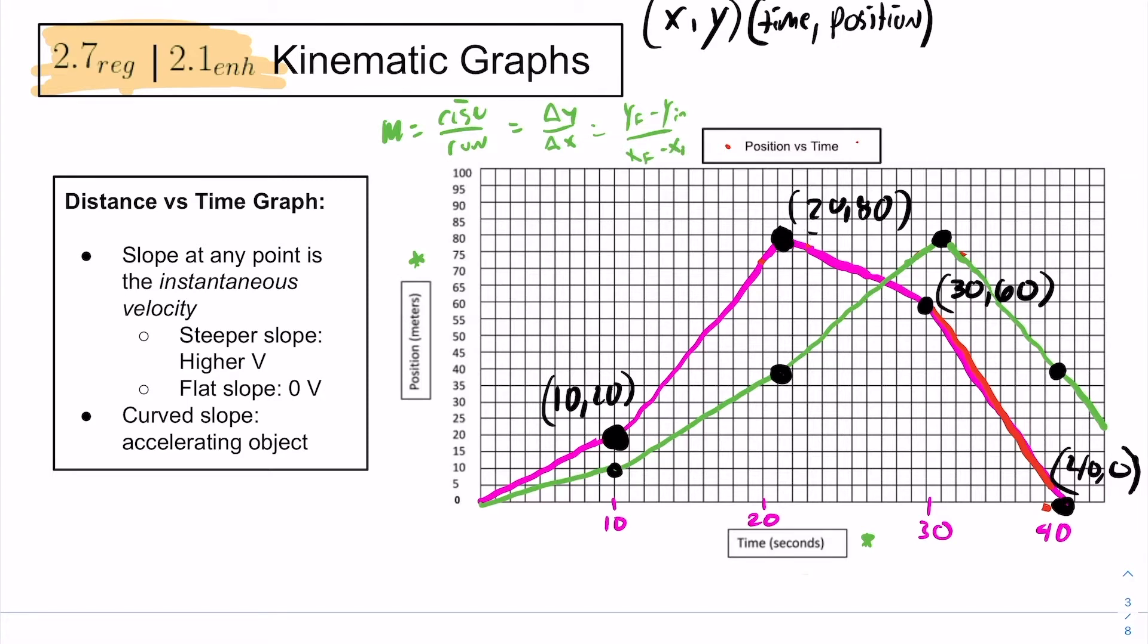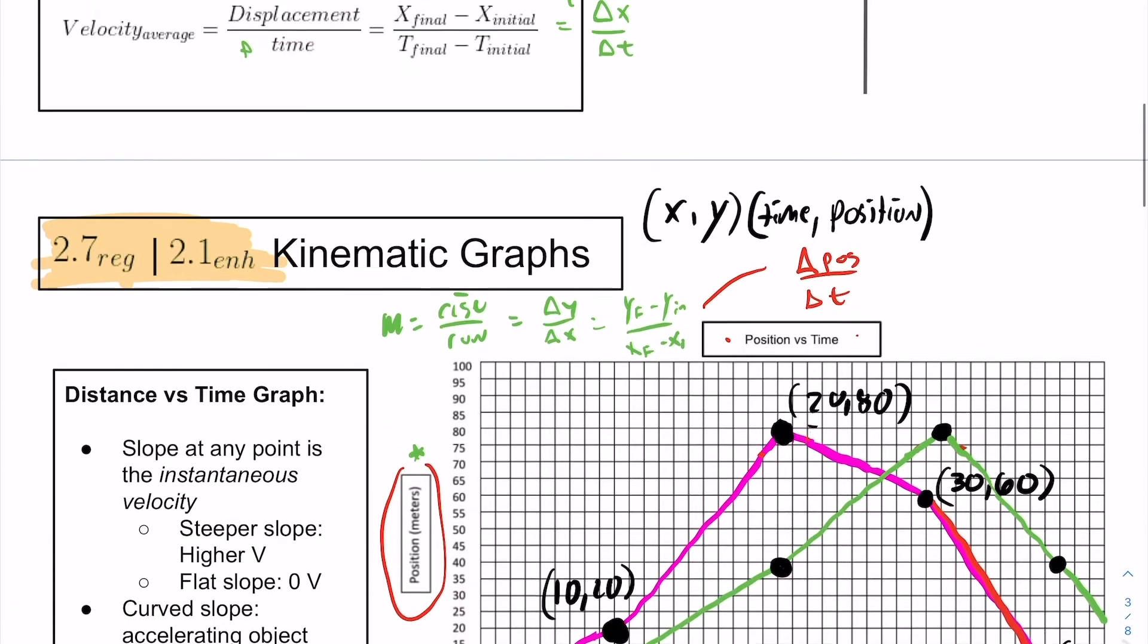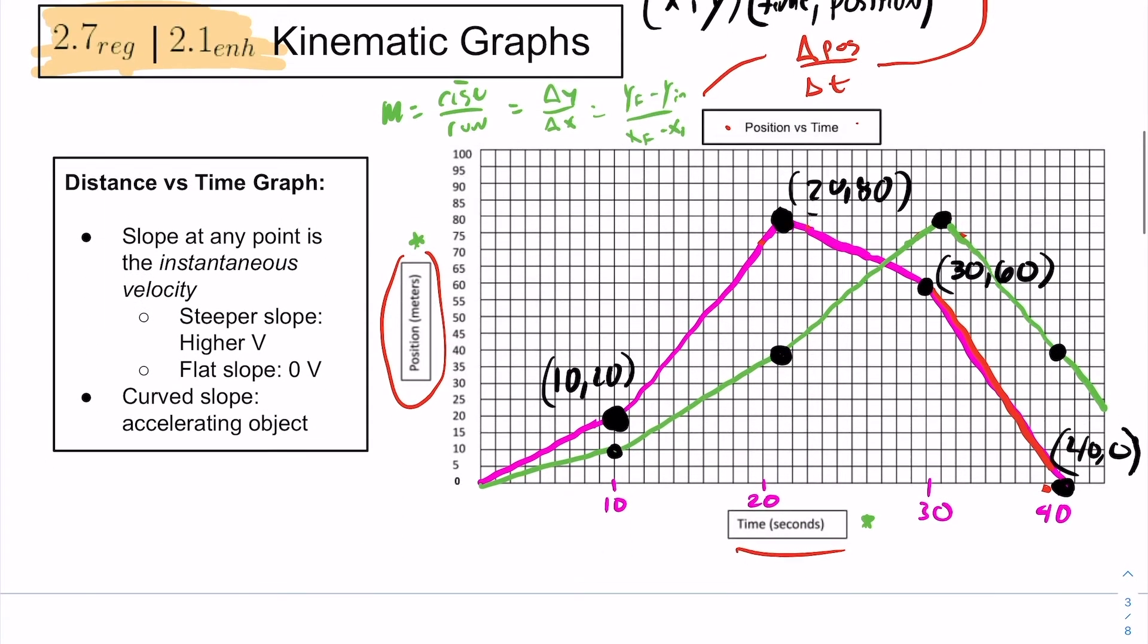And so, in this case, our y's and x's are position over time. And it turns out that the slope ends up being change in position over change in time, which gives us velocity. So, the slope of any position versus time graph is velocity. We can get some information from that.